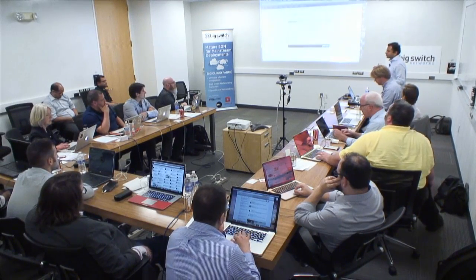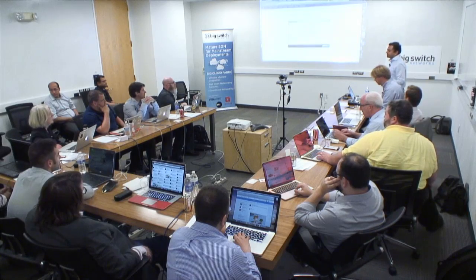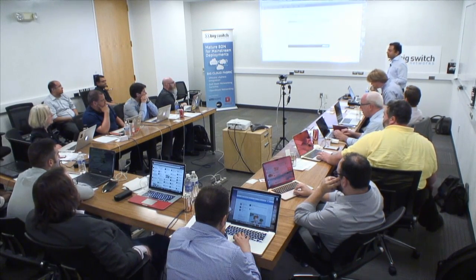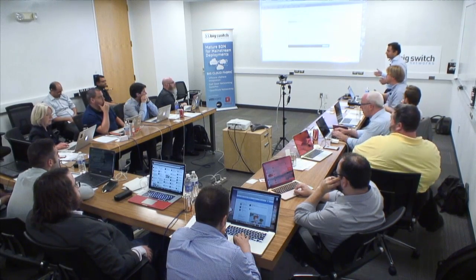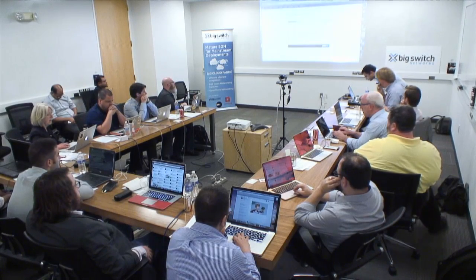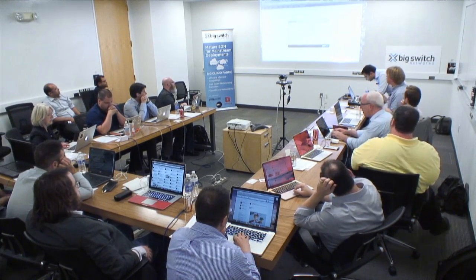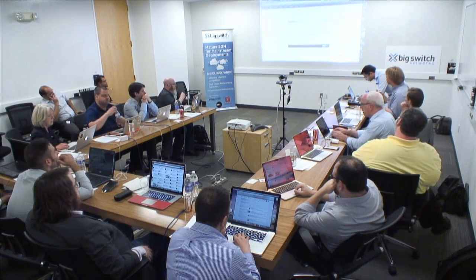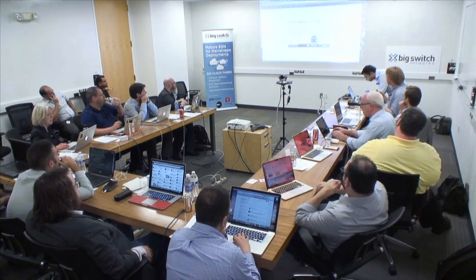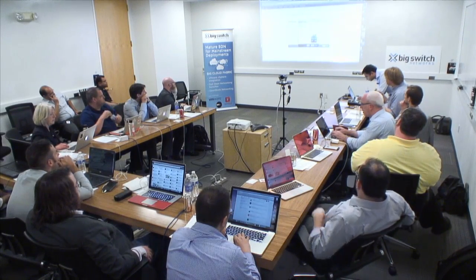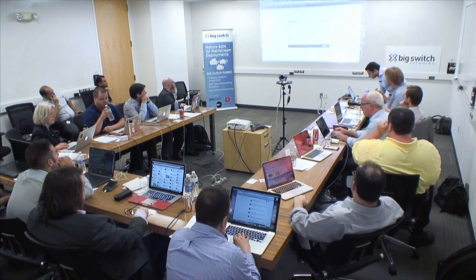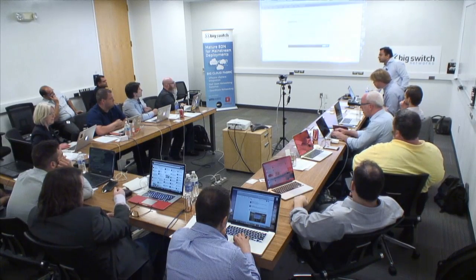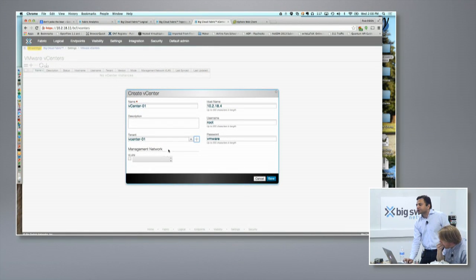We will start by registering ourselves with vCenter. We can support multiple vCenters — as of the shipping release, we have tested 20 vCenters, so with one Big Cloud Fabric you can go up to 20 vCenters. From the software limit, you can go more. I am simply associating this particular vCenter with a tenant, and now all the networks and VLANs which will be created within that vCenter will be associated with this tenant.